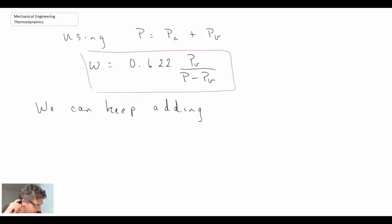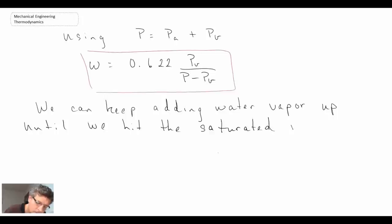Now, this is a useful relation. However, what we want to do is look at the bounds by how much water vapor we can actually add until we get to what we would call a saturation point. So we can keep adding water. And we can do this up until reaching what we call the saturated air point.